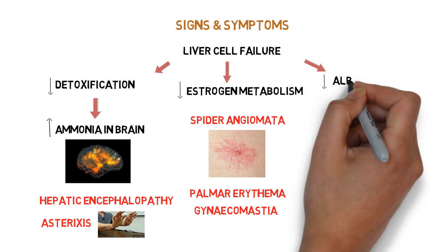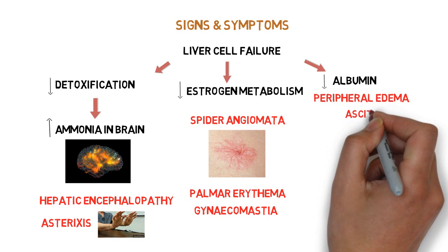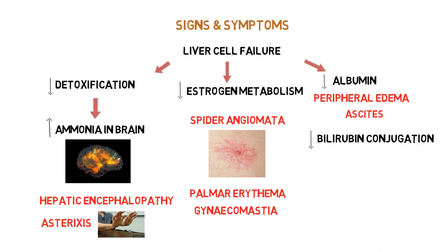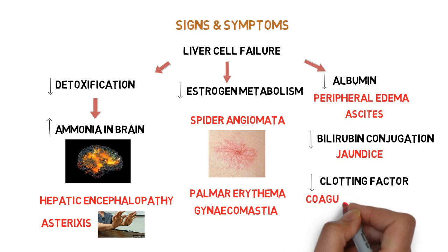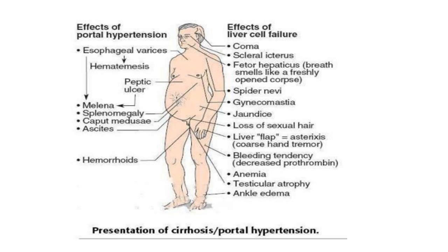As liver cells are damaged, albumin is decreased, which leads to peripheral edema and contributes to ascites as well. Decreased conjugation of bilirubin leads to yellowish discoloration of urine and sclera, that is jaundice. Clotting factors are produced less in the damaged liver, causing coagulation disorders. You can remember all these manifestations in this diagram — think of manifestations first due to portal hypertension and then due to liver cell failure.